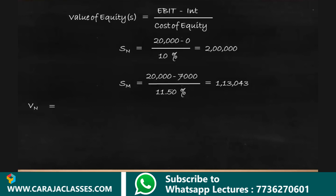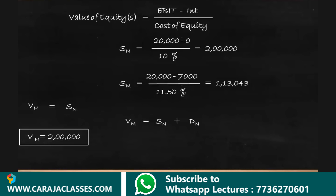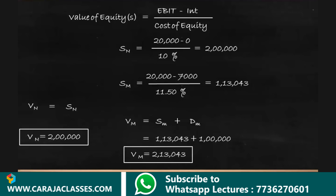The value of firm N equals only its equity value, which is 2 lakhs. The value of firm M equals equity plus debt: 1,13,043 plus 1 lakh, giving 2,13,043. Both firms had the same level of earnings, yet the levered firm M has a higher value of 2,13,043 compared to unlevered firm N at 2 lakhs. The MM approach argues this difference due to capital structure cannot persist.